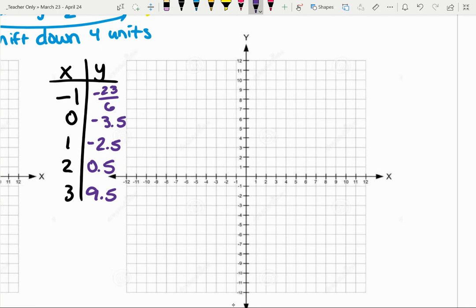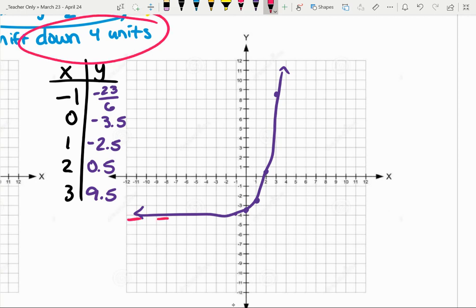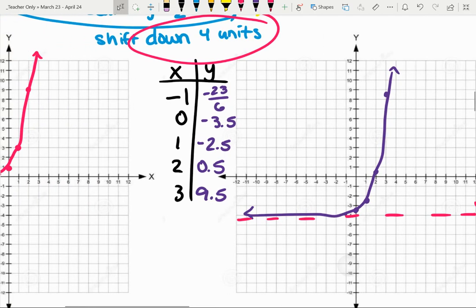So let's see, I'm going to go 0, negative 3 and a half, 1, negative 2.5, 2, 1/2 and 3, let's see, 9.5 and then this negative 23/6 is really close to negative 4. So notice that that minus 4, hopefully your graph looks a little bit better than mine, that that minus 4 or that transformation down 4 units actually shifted our asymptote for this from the x-axis down to the line y equals negative 4.